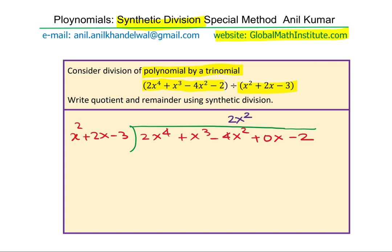When I multiply 2x square with x square plus 2x minus 3, I get 2x to the power of 4 plus 4x cube minus 6x square. And now, we have to take away. That is the process to follow. When you take away, you get x cube minus 4x cube, which is minus 3x cube with a negative sign. And here you get plus 2x square. Bring down 0x.